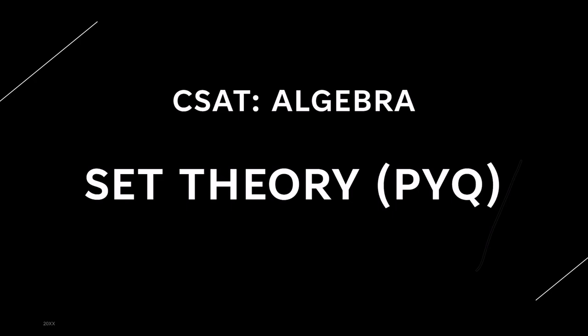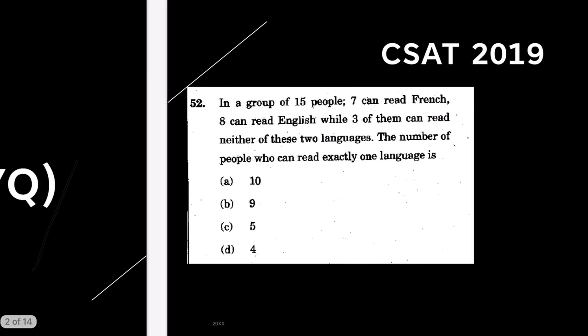Hello everyone, welcome back to the channel. This is probably going to be the last video for the concepts of algebra. We are going to do previous year questions on set theory. In the last video, we learned the basics of set theory, where we covered the Venn diagram, disjoint sets, union, intersection, difference and so on. If you have not watched the last video, I would recommend you go watch it first and then come back. You can also download this PDF from the Telegram channel. Try to solve the questions on your own first before looking at the solution. Let's start.